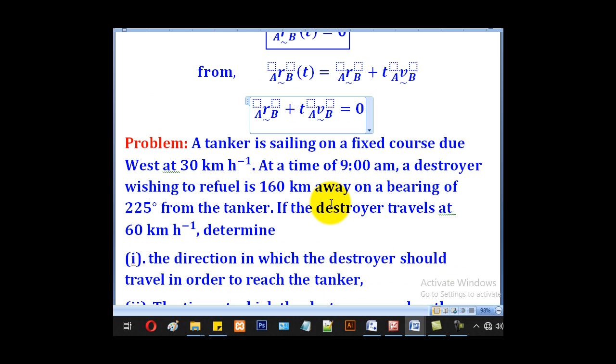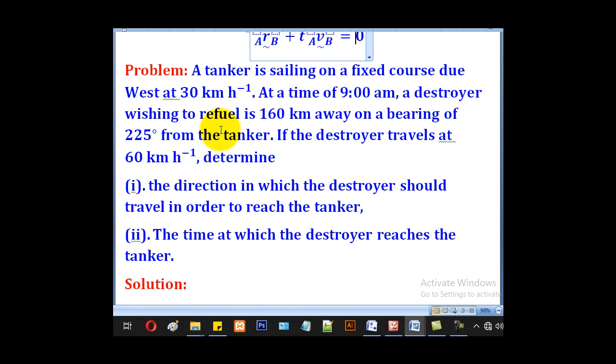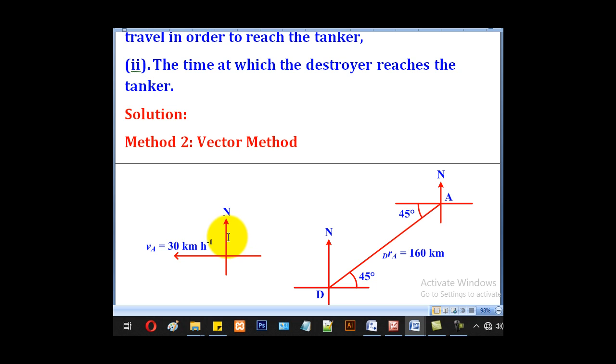We shall use that knowledge to solve this problem using vector method. A tanker is sailing on a fixed course due west at 30 km per hour. At a time of 9 AM, a destroyer wishing to refuel is 160 km away on a bearing of 225° from the tanker. If the destroyer travels at 60 km per hour, determine: (i) the direction in which the destroyer should travel in order to reach the tanker, and (ii) the time at which the destroyer reaches the tanker.